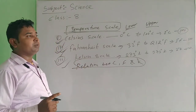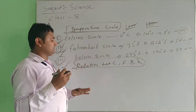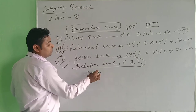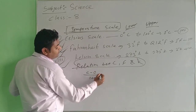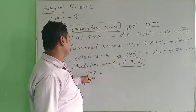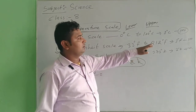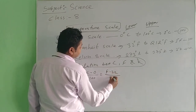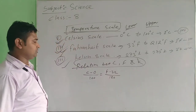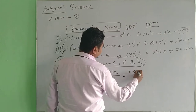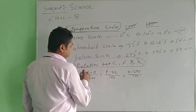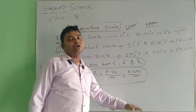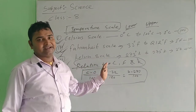Here is the formula for converting between different scales. The relation is: (C − 0) / 100 = (F − 32) / 180 = (K − 273) / 100. This relates the upper fixed point to the lower fixed point for each scale. This is the relationship between Celsius, Fahrenheit, and Kelvin.